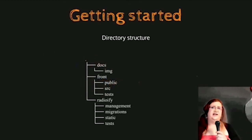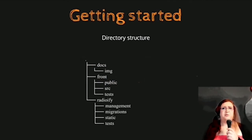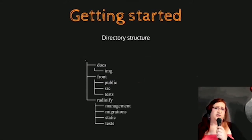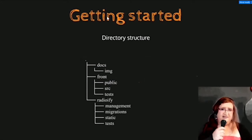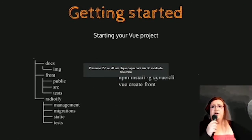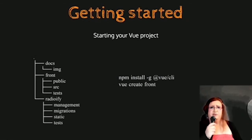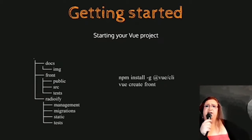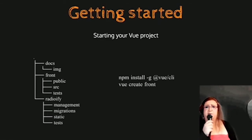Being a full-stack developer, I like to have my frontend in the same repository as my backend. I wanted to have my frontend at the same level as any Django application in my project. To get to that point, all I had to do was install Vue CLI, which is the CLI tool for Vue. Once that was done, I typed 'vue create front', 'front' being the name of my frontend application.